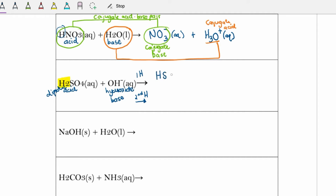Starting with the first proton donation: sulfuric acid gives away one hydrogen, leaving HSO₄⁻ with one hydrogen remaining, and the hydroxide accepts that hydrogen to become H₂O. For the second reaction, HSO₄⁻ gives away its remaining proton to become the sulfate ion SO₄²⁻, and the water gains a hydrogen to become the hydronium ion H₃O⁺.